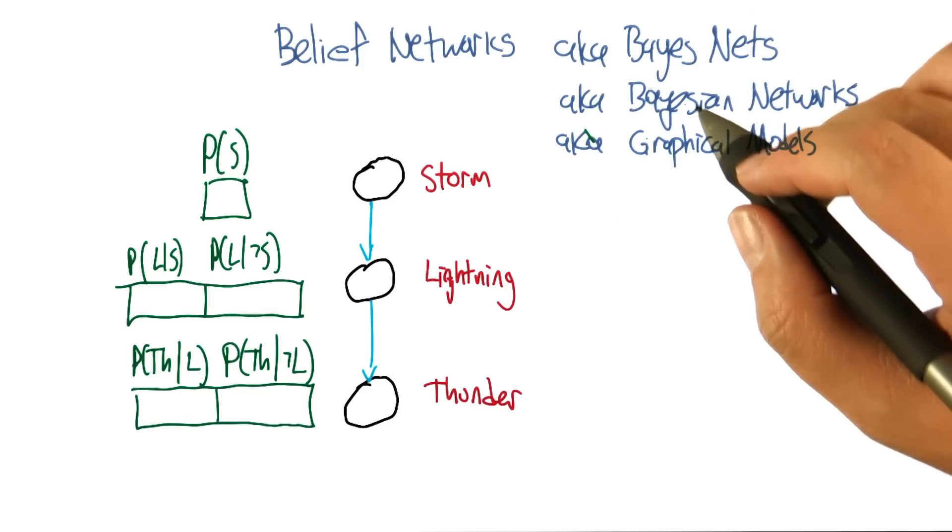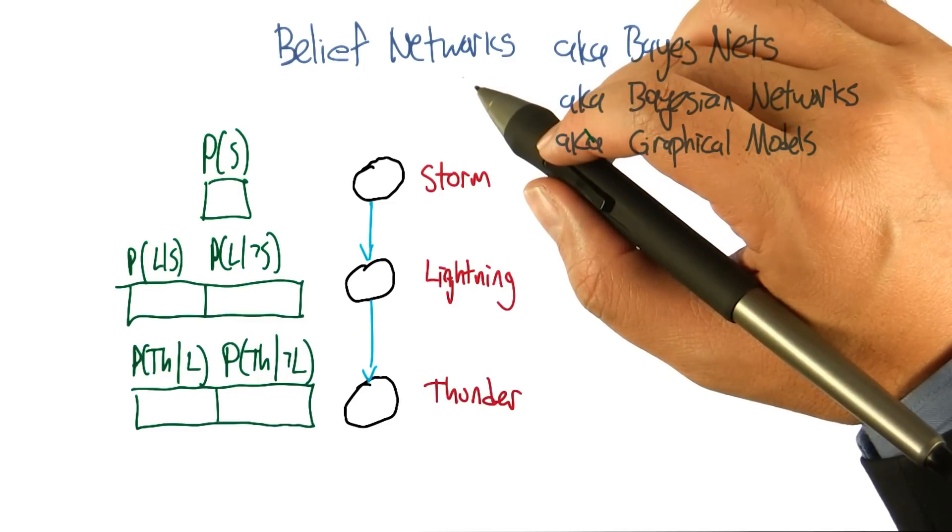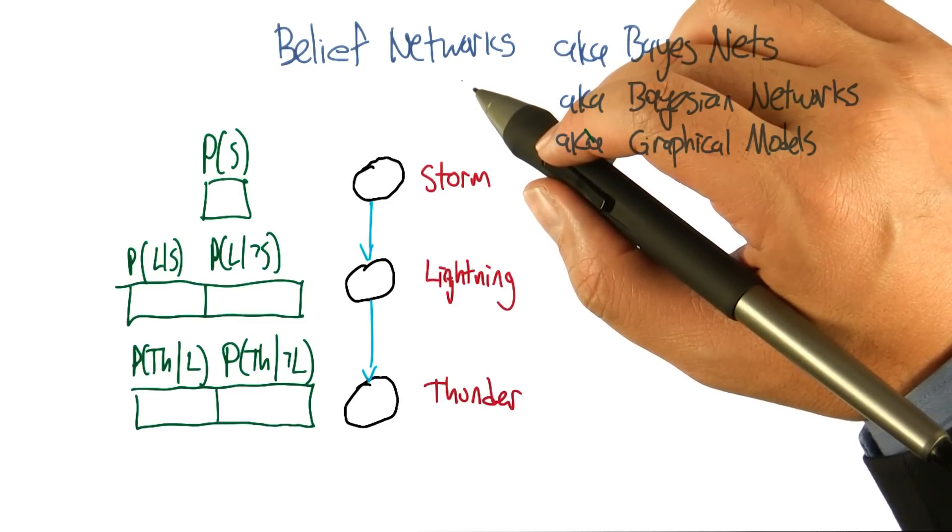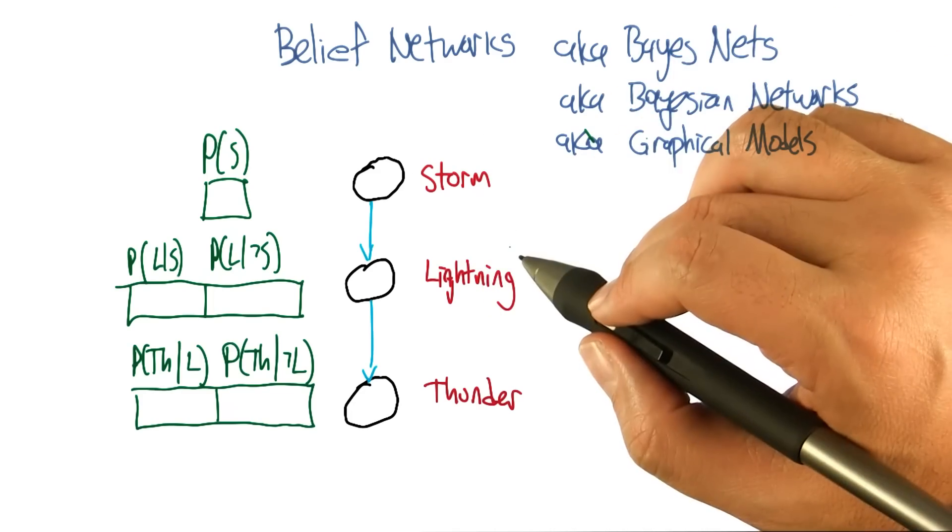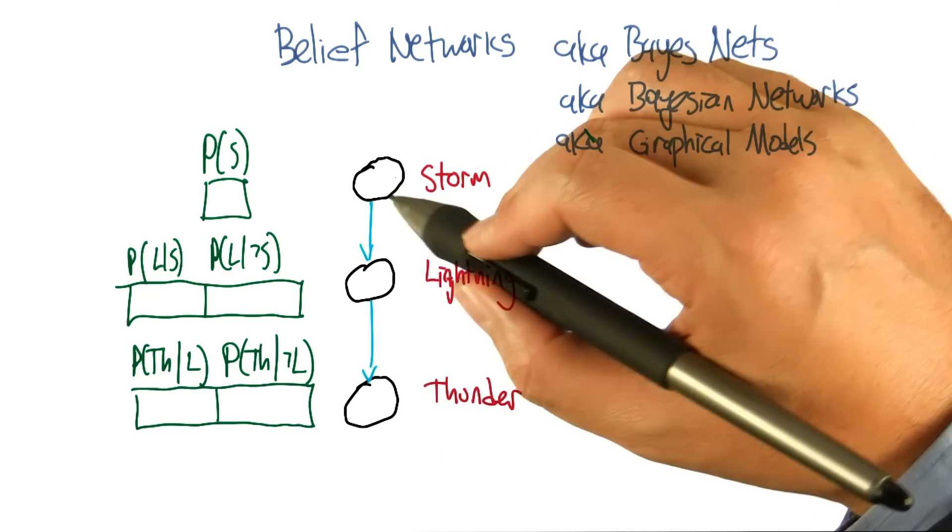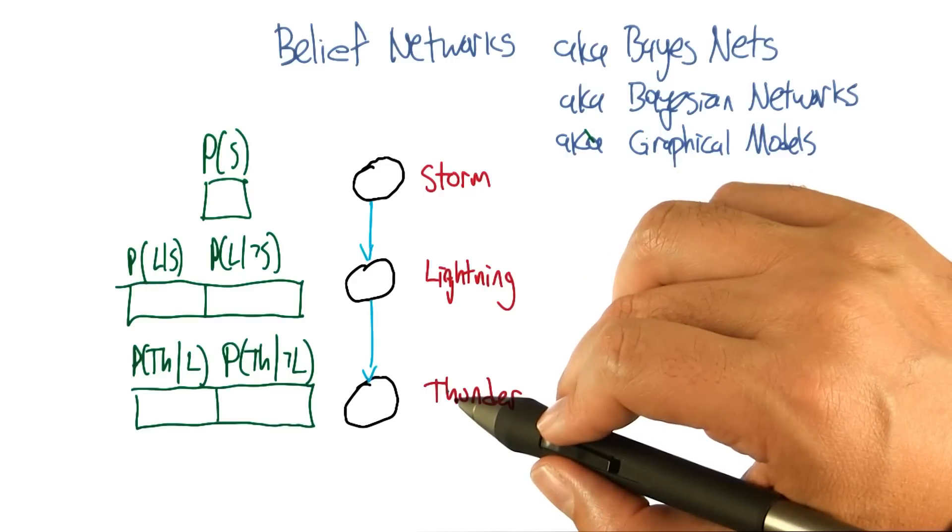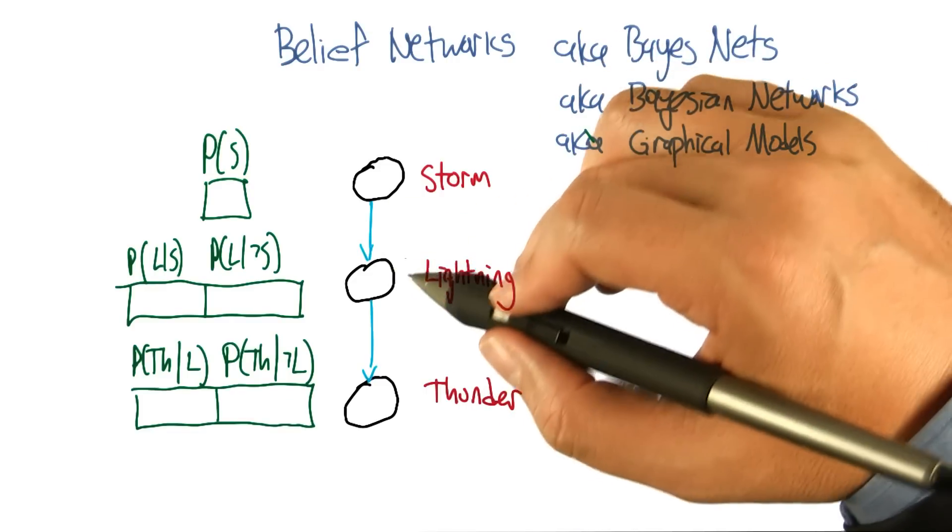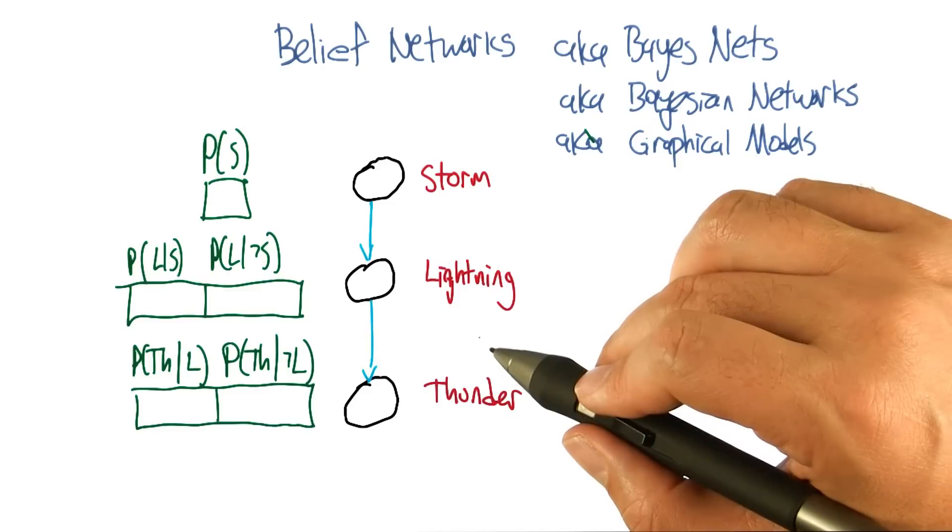The idea is that we're going to represent the conditional independence relationships between all the variables in the joint distribution graphically in terms of a little picture like this, where there's nodes corresponding to all the variables and edges corresponding to dependencies that need to be explicitly represented.